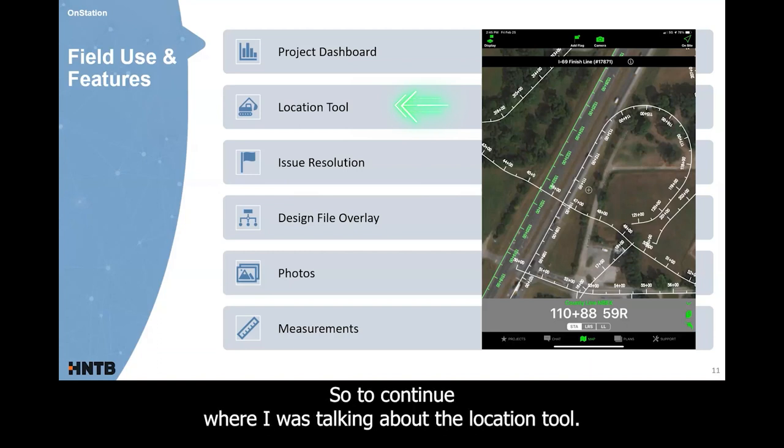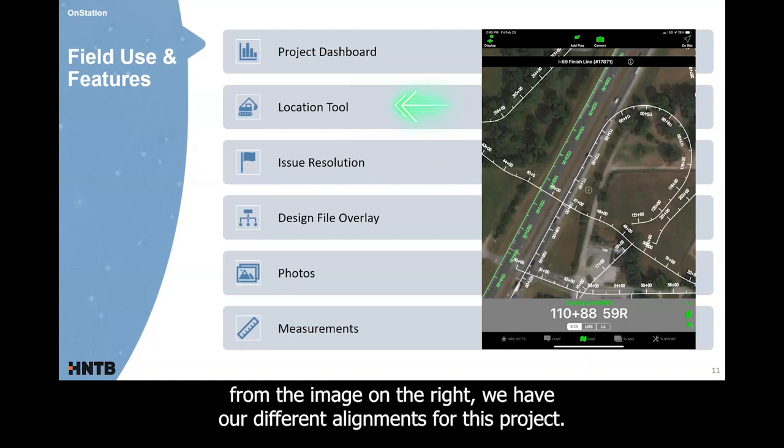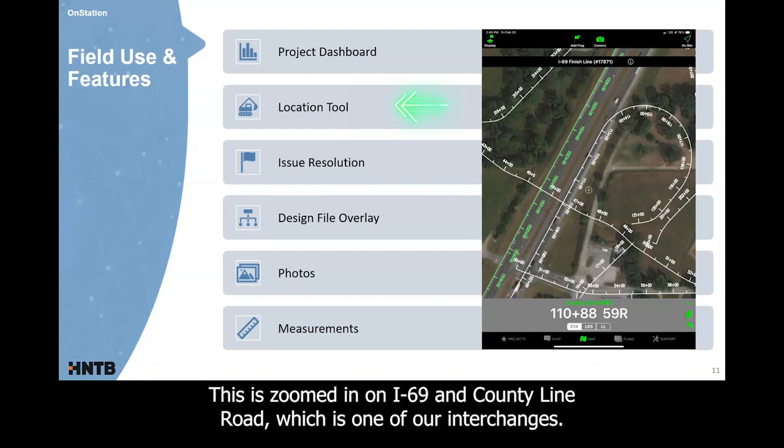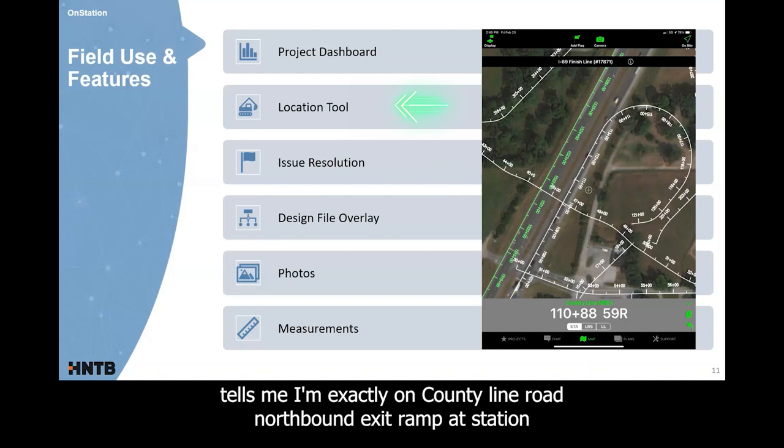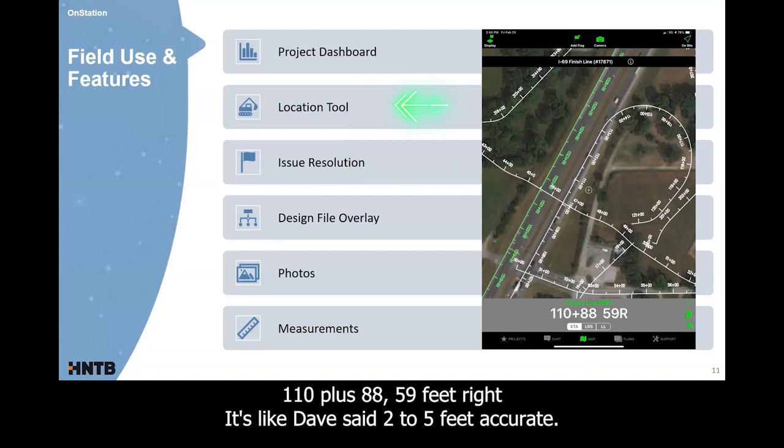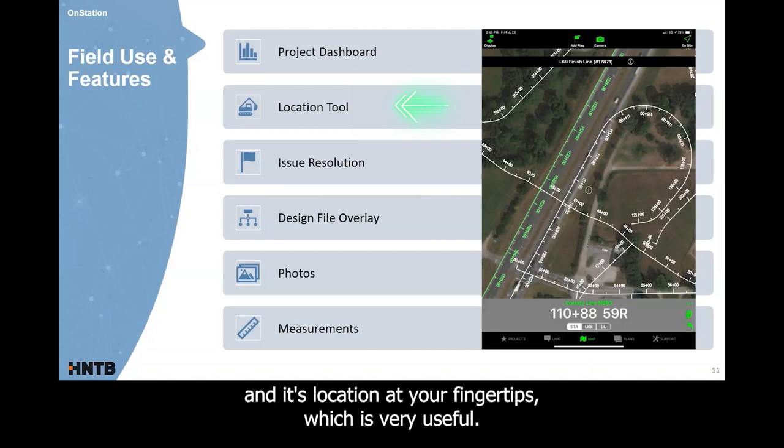So to continue where I was talking about the location tool, as you can see from the image on the right, we have our different alignments for this project. This is zoomed in on I-69 and County Line Road, which is one of our interchanges. And based on where I'm standing, the little crosshairs tells me I'm exactly on County Line Road, northbound exit ramp, at station 110+88, 59 feet right. It's like Dave said, two to five feet accurate. I've got full service when I'm out there. And it's location at your fingertips, which is very useful.